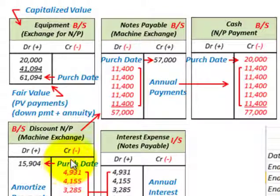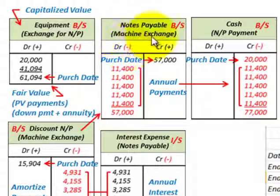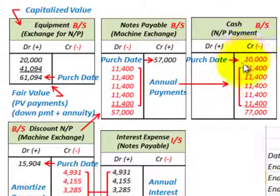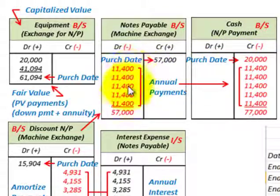For the credit side, at the purchase date we credit notes payable for fifty-seven thousand dollars, and we credit cash for twenty thousand dollars for the initial down payment. So the debits are equipment at sixty-one thousand ninety-four dollars and discount on notes payable at fifteen thousand nine hundred four dollars, offset by credits to notes payable and cash.